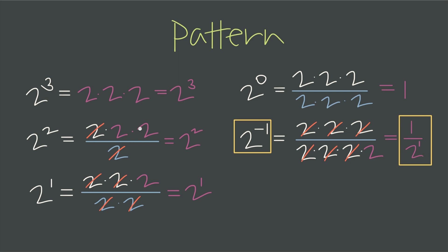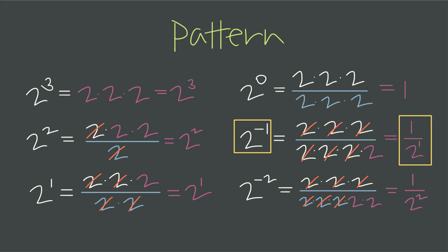We're proving the rule to ourselves by establishing this pattern. To get 2 to the negative 2, stepping down one more, we need to add one more factor of 2 to the denominator. So 2 to the negative 2 puts 5 factors of 2 in the denominator, cancels 3 factors from both numerator and denominator, leaving 2 factors in the denominator — therefore 2 to the negative 2 equals 1 divided by 2 to the positive 2. This pattern proves that taking the reciprocal and changing the sign from negative to positive is mathematically correct.